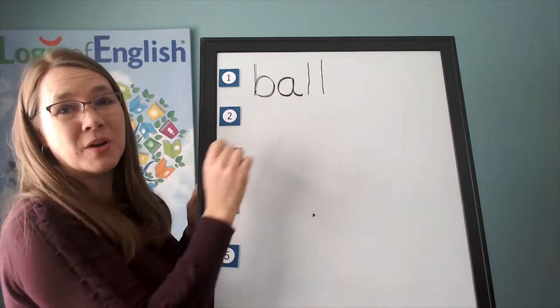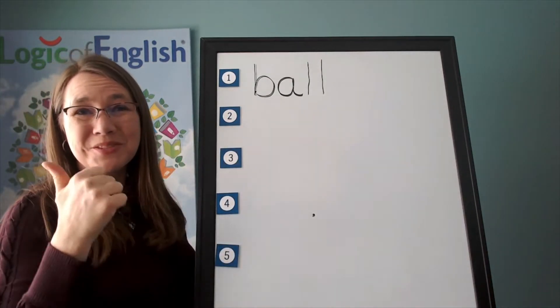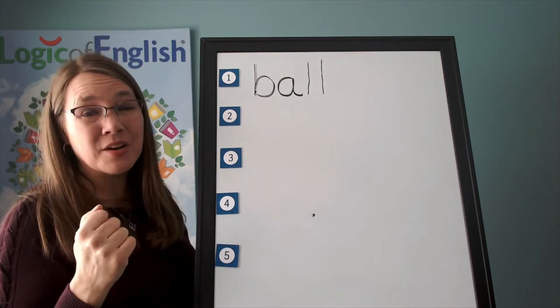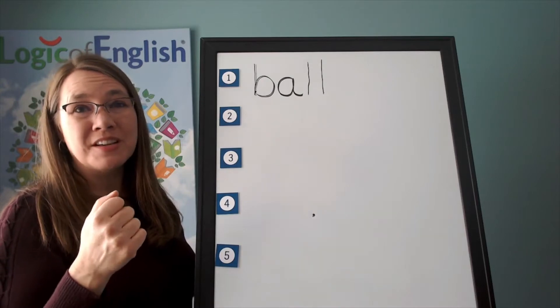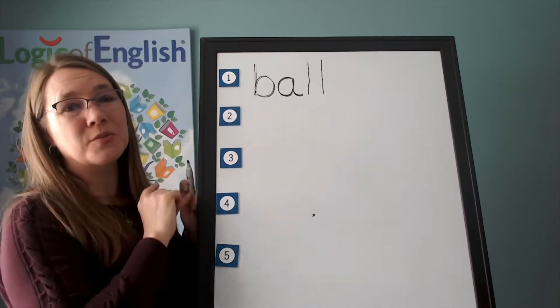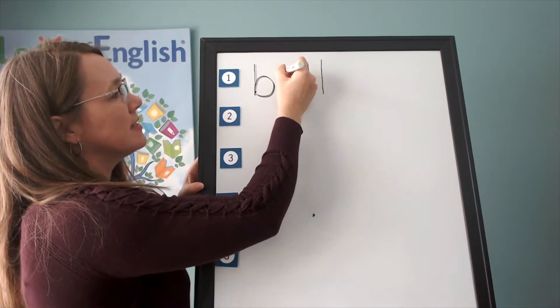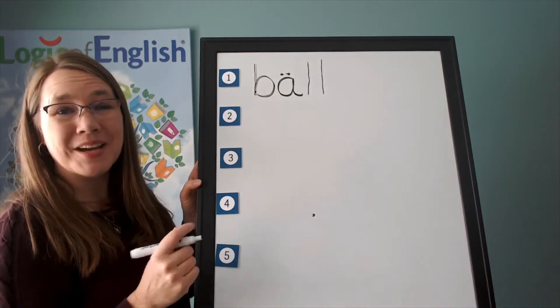All right. How will we mark ball? What sound of A, A, aw is this? You're right. It's the third sound, which for a vowel is its broad sound. So we mark it with two dots to show that it is saying its broad sound.